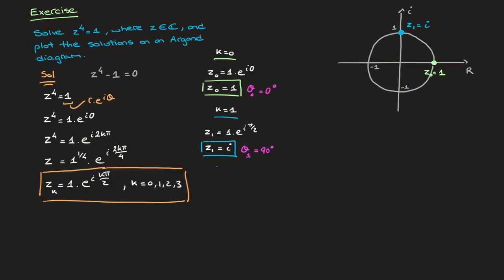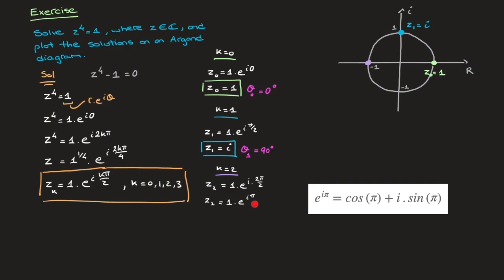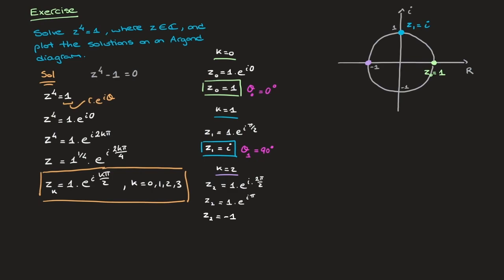When k equals 2, the expression gives z sub 2 equals 1 times e to the i·2π over 2, which simplifies to e to the i·π. On the Argand diagram, this root still lies on the unit circle with argument π, corresponding to 180 degrees. Checking: e to the i·π equals cosine of π, which is negative 1, plus i·sine of π, which is 0. So z sub 2 equals negative 1. The argument is theta sub 2 equals 180 degrees.